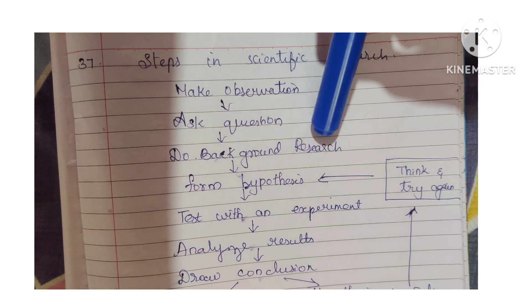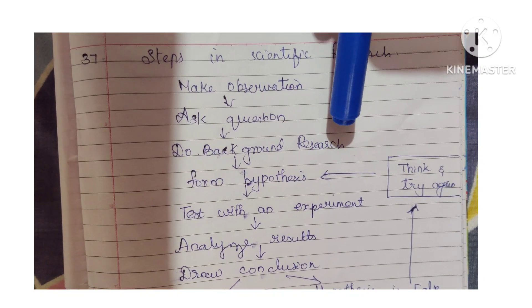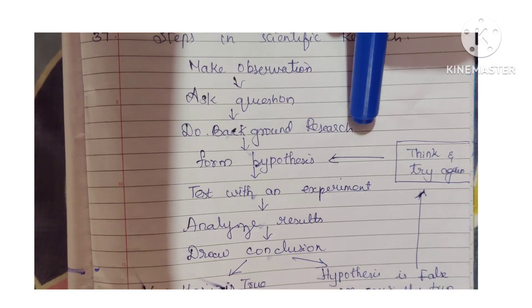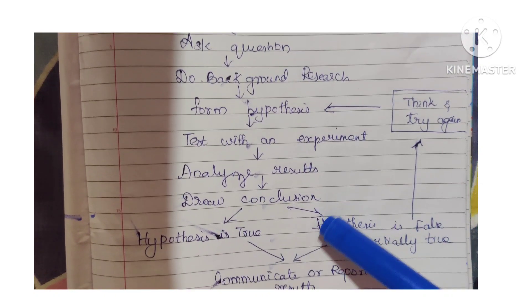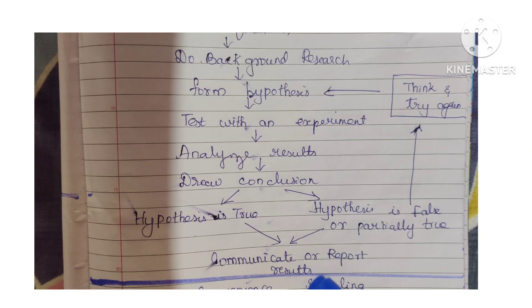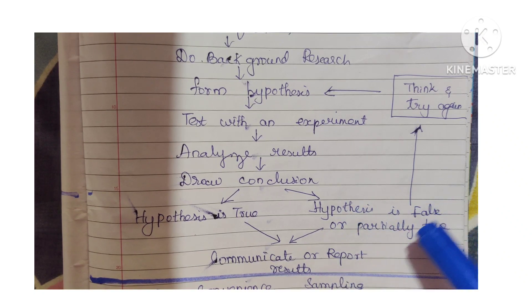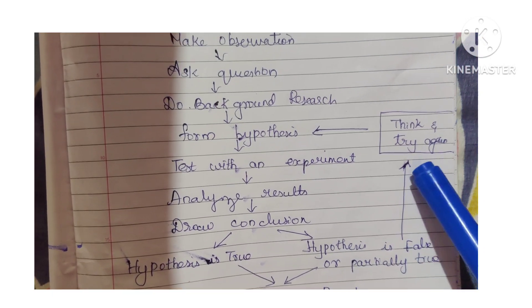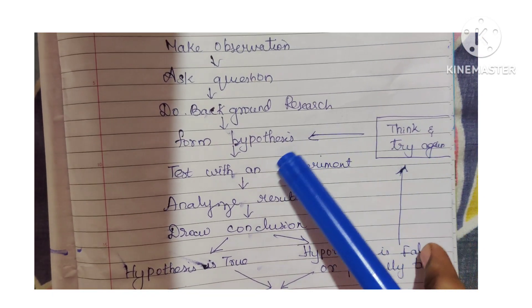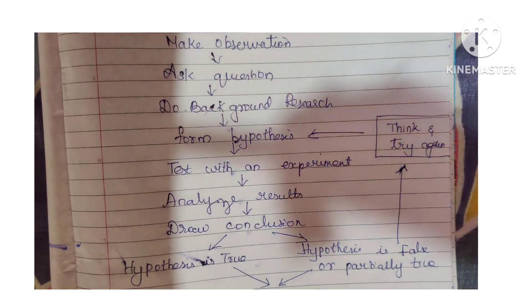To summarize the steps in scientific method: make observation, ask questions, do background research, form hypothesis, test with an experiment, analyze the results, draw conclusion. Whether the hypothesis is true or false or partially true, communicate or report the results. If false or partially true, you can reframe your hypothesis and do another study.